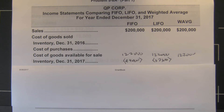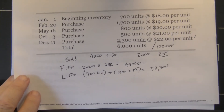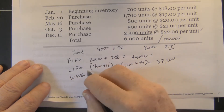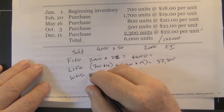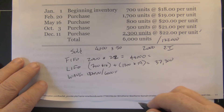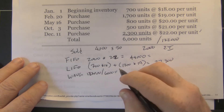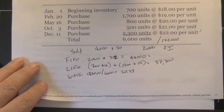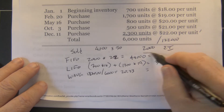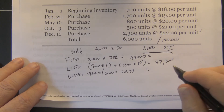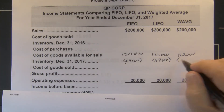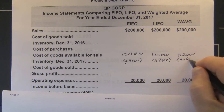Under weighted average, we take the 6,000 units divided into $122,000, and that equals — rounding a little bit — $20.33 per unit. When we multiply that times the 2,000 units in ending inventory, we come up with $40,660. So the ending inventory is $40,660.